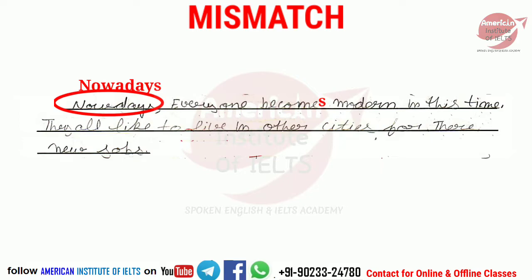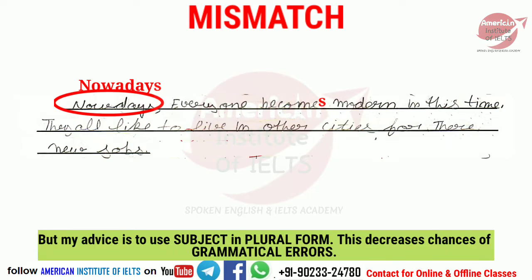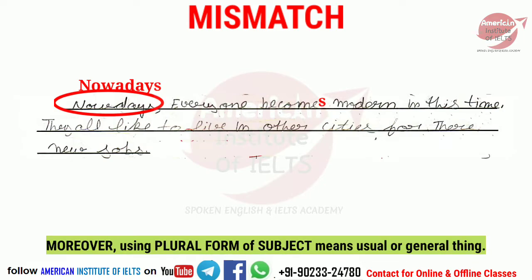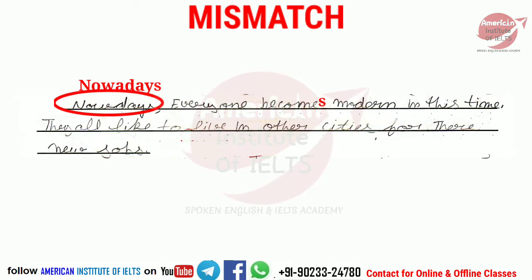In the last example: 'nowadays' spelling mistake — it should be 'nowadays' not 'now are days'. 'Everyone becomes modern in this time' — 'everyone' is singular so 'becomes' is correct. But then 'they all like to live in other cities' — this is very important: you cannot mix a singular subject 'everyone' with 'they'. If you take your subject as singular, you must keep it singular throughout the entire writing. My advice is to keep your subject in plural form, because when you speak in plural you are making a general statement, not about any specific person. For example, if your essay is about students, use 'students' as subject. If about people, use 'people'. So here: 'people become modern in this time and they all like to live in other cities for their new jobs'.